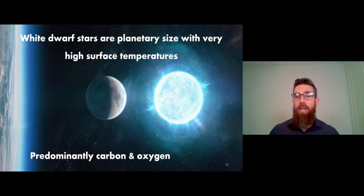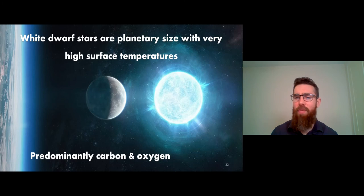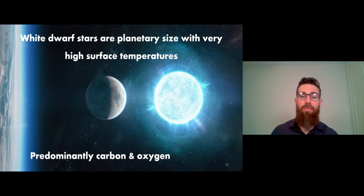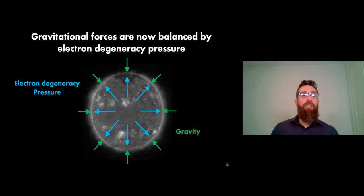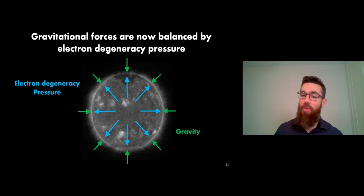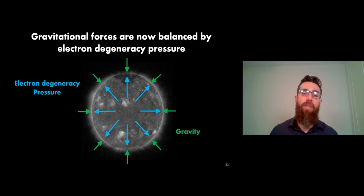Once the planetary nebula dissipates it leaves the exposed carbon-oxygen core, which moves down into the white dwarf group. White dwarfs become less luminous because the outer layers have been lost - only that very small central core remains. They have very high surface temperatures but because they're very small their luminosity isn't great, which is why they come down on the HR diagram. White dwarf stars are typically planetary-sized - the smallest discovered is a little bigger than our moon - mostly made of carbon and oxygen. What holds them together is electron degeneracy pressure, where electrons are forced into their ground state, creating a pressure that supports against gravitational forces.